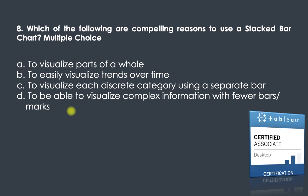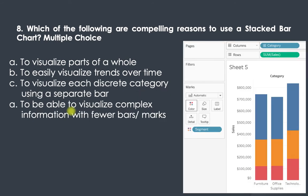The eighth question is a multiple-choice question: which are compelling reasons to use a stacked bar chart? In a stacked bar chart, multiple segments are stacked on top of each other within each category bar. The first option — to visualize parts of a whole — is correct, as we are identifying the parts within each bar.